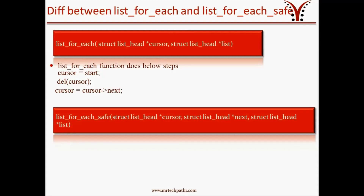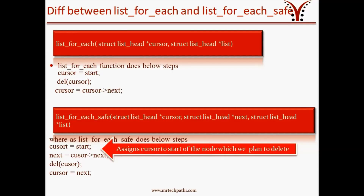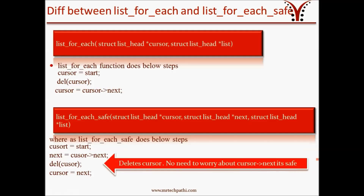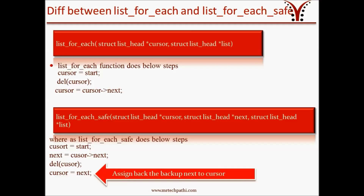This step may go wrong because the cursor is deleted without taking a backup of cursor_next. To avoid this situation, we have list_for_each_safe macro. It assigns a temporary cursor to the start of the node to delete, takes a backup of cursor_next in the next pointer provided as input, deletes the cursor node, then assigns back the backup next pointer to the cursor — which is the safe way. This is likely why it is named list_for_each_safe. When deleting a node in a list, always use list_for_each_safe rather than list_for_each.